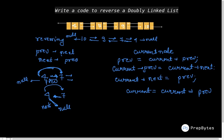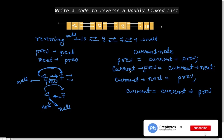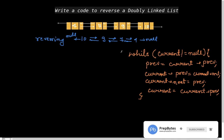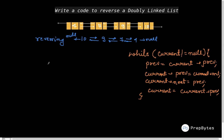Let's write the complete code and do a dry run to verify our logic. Initially, prev is null and current is node 4. We do current.prev = current.next, so the prev of 4 starts pointing to 7. The prev of 7 is still pointing to 4 at this stage. We denote these as 'p' for prev and 'n' for next to keep things clear.